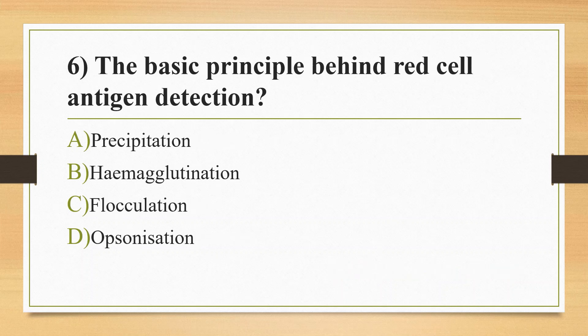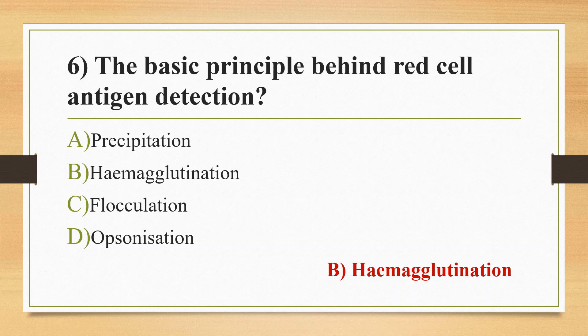Sixth question: the basic principle behind red cell antigen detection. Option A: precipitation. Option B: hemagglutination. Option C: flocculation. Option D: opsonization. The answer is option B, hemagglutination. Agglutination is the process involving clumping of particles by specific antibodies to surface antigenic components. In ABO blood grouping, agglutination occurs when RBC antigens are bound by antibodies in the serum.